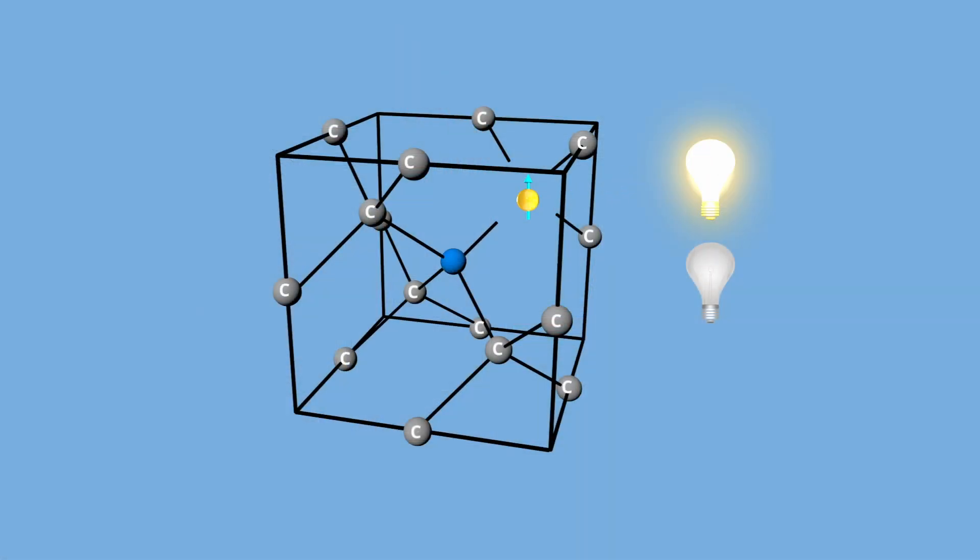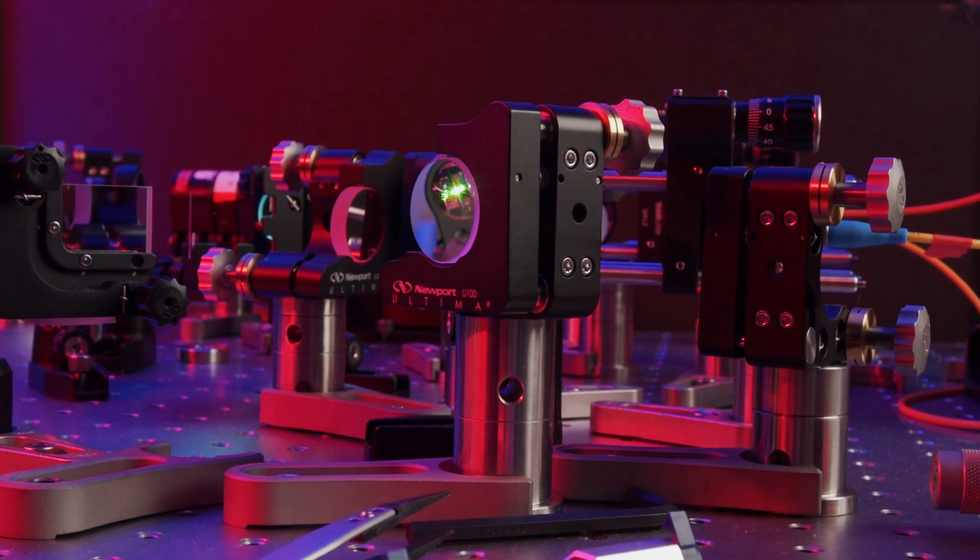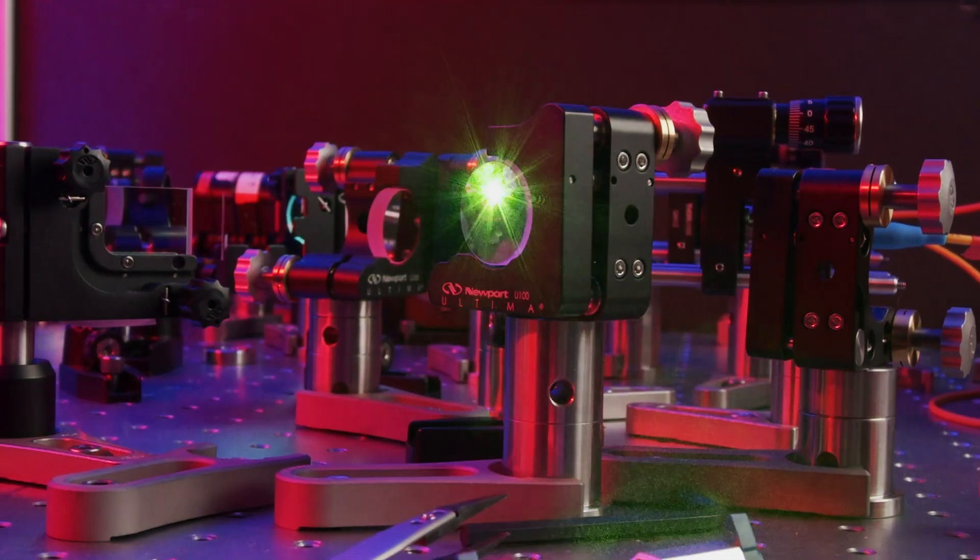But it's not just having a quantum system with two possible measurement outcomes that makes something a qubit. You also have to have a way to easily manipulate and measure which state it's in. Spin states of NV centers are fairly easy to manipulate with light and magnetic fields. And to measure it, we shoot it with a laser. This makes the NV center emit light. And the brightness of the light tells us whether the defect is spin up or spin down.